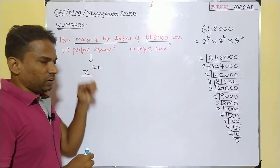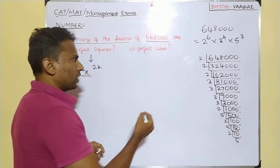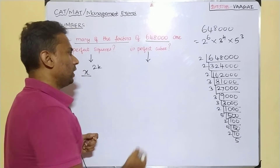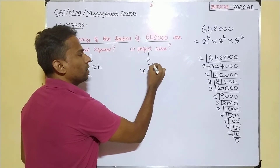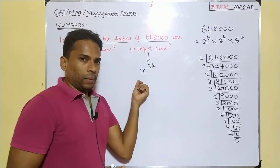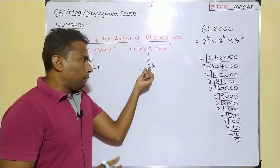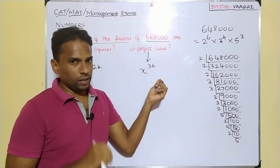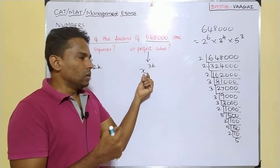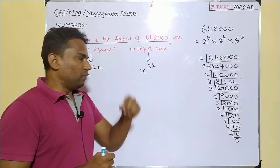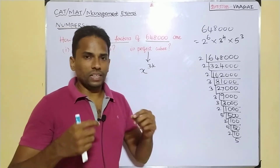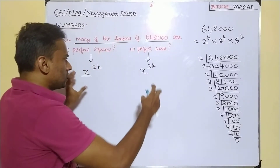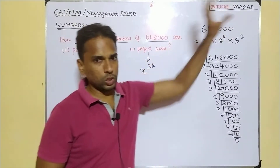Similarly for perfect cubes: a perfect cube is a number expressed in the form x to the power 3k. This time the power must be a multiple of 3. If the power to which you are raising is a multiple of 3, then definitely your number will be a perfect cube. These are the key elements for solving this problem.